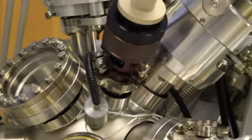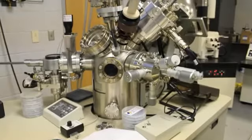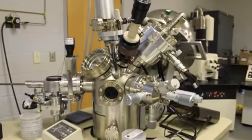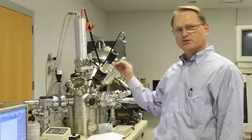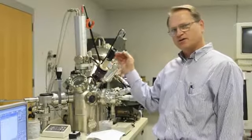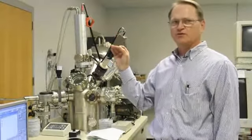This is an X-ray photon spectrometer. We always call it the XPS because that's a lot easier. And what we use this for is to determine the material composition on the surface of a substrate, on the surface and very near the surface.